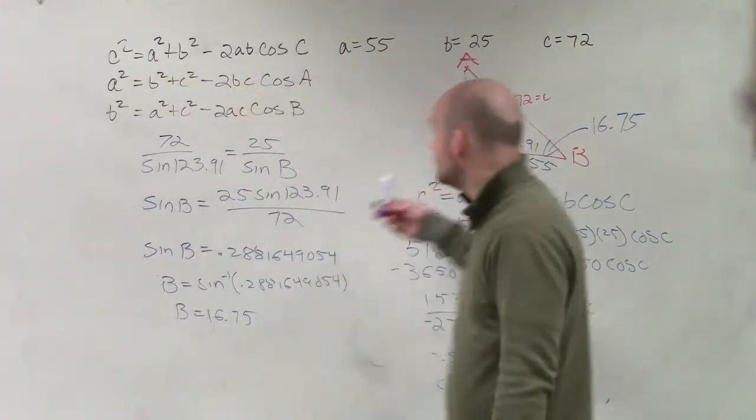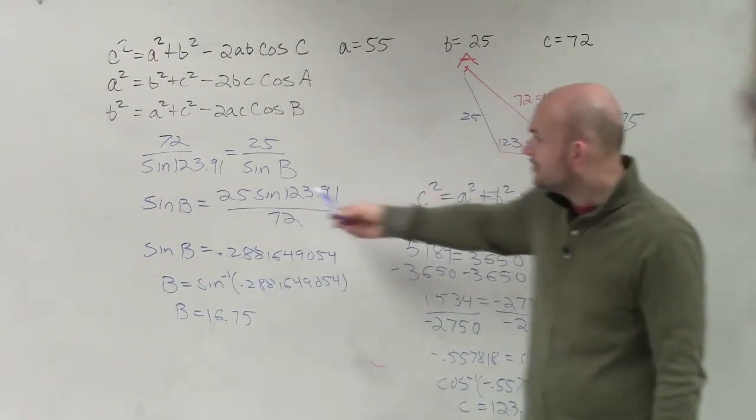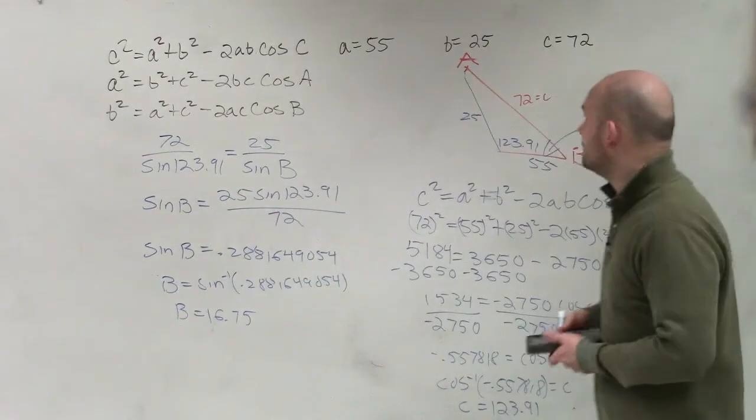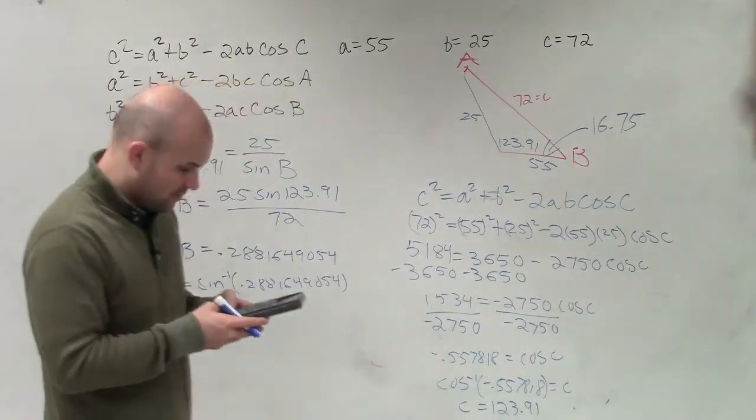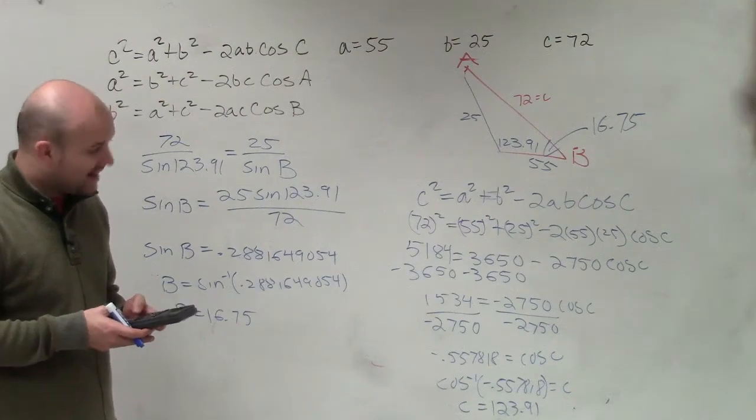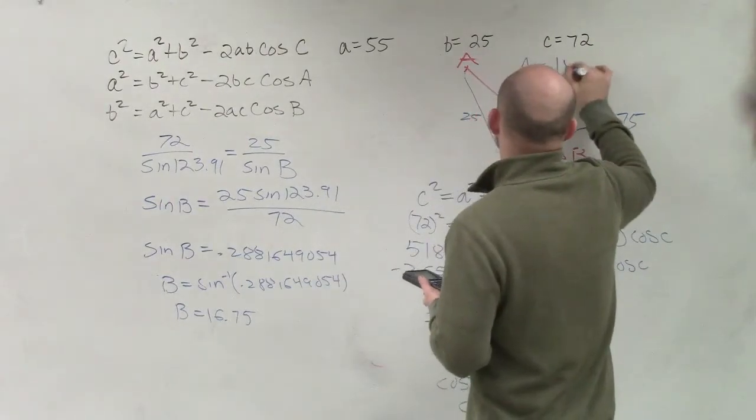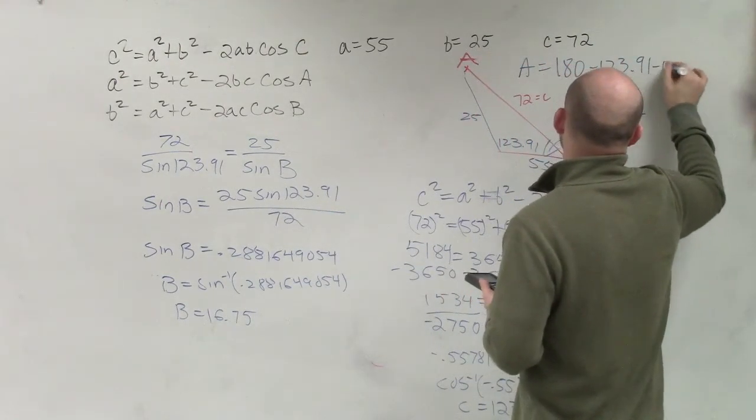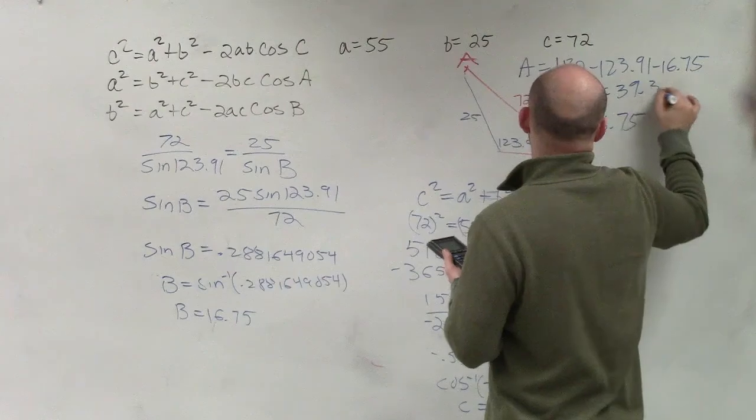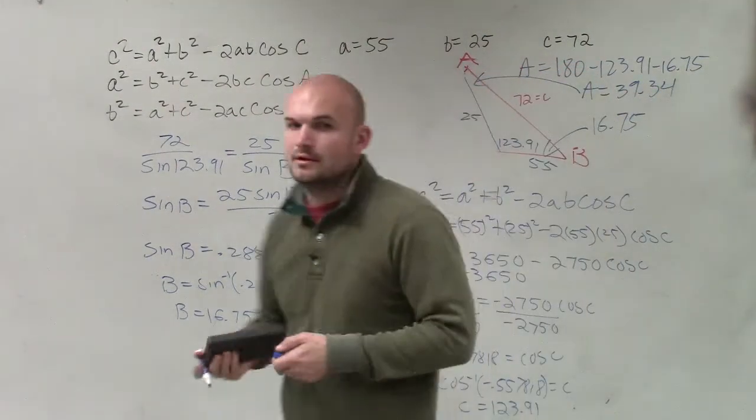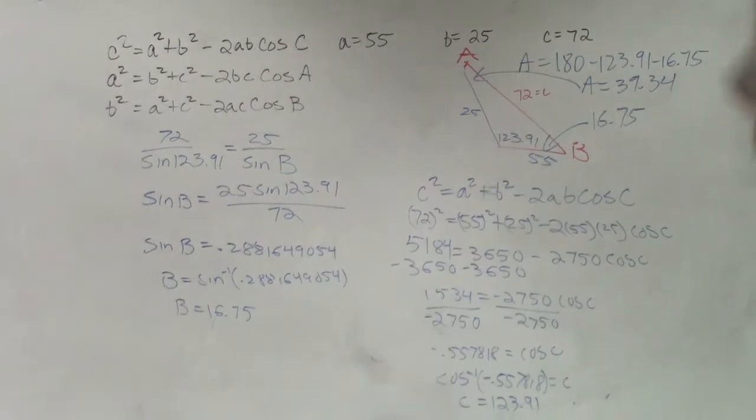Now, you could use law of cosines to find this angle if you want to, but once you find an angle and you have a ratio, I think law of sines is pretty simple. So I can just take 180 minus 123.91 minus 16.75. So A equals 180 minus 123.91 minus 16.75. And therefore, A equals 39.34. And there you go.